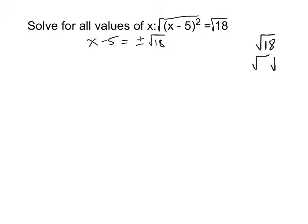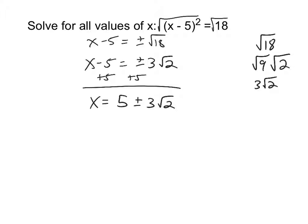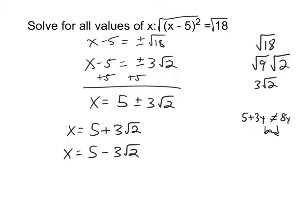So, 18, let's see. How about 6 times 3? Nah, that's no good. How about 9 times 2? That's good because 9 is a perfect square. And the square root of 9 becomes 3, and we get 3 radical 2. So my answer then is x minus 5 equals plus or minus 3 radical 2. Now, check this out though. Because when I add my 5 to both sides, I can't add the 5 to the 3 because the 3 is being multiplied by the radical 2. So literally, my answer is just going to be 5 plus or minus 3 radical 2. Yeah, it looks a little different, but that's how it is. I mean, think about if you got an answer of like 5 plus 3y. You wouldn't say 8y. That would be bad. So we just got to leave it as 5 plus or minus 3 radical 2.